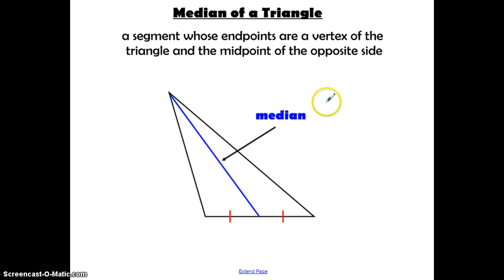A median of a triangle is a segment whose endpoints are a vertex and midpoint of the opposite side. So if you were to take this side and find the midpoint of it and connect it to the opposite vertex, you have this median.